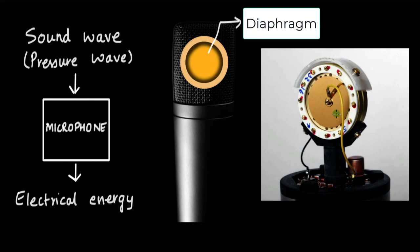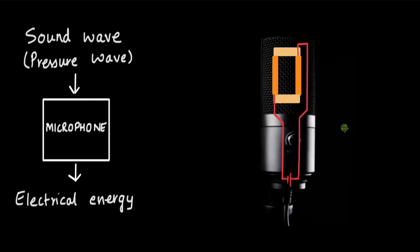Now let's look at a sectional view from an angle. Here we have the metal ring at the top, the diaphragm, and the back plate. Both plates are connected to a battery. In between these plates there is an insulator — usually air, because air is an insulator. This setup now starts acting as a capacitor: you have one positive plate, one negative plate, and a dielectric between them.